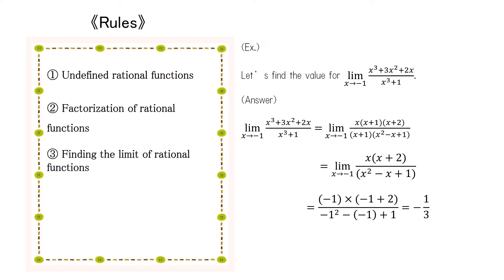After eliminating (x + 1) from both the numerator and denominator, we get x(x + 2) / (x² − x + 1). Substituting negative 1 for x, we get the limit as x approaches negative 1 of (x³ + 3x² + 2x) / (x³ + 1), which equals negative 1 over 3.